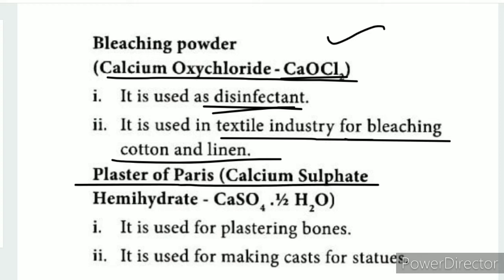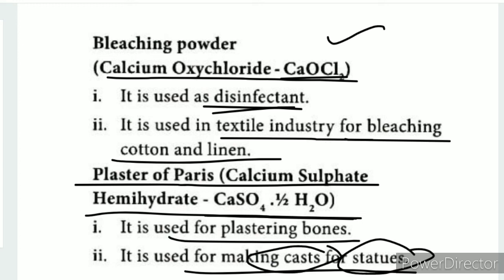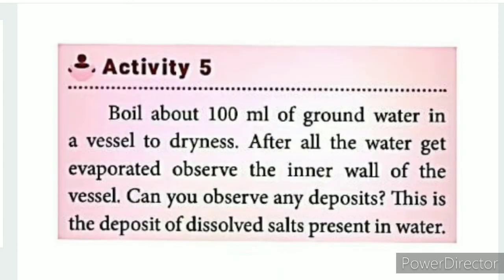Plaster of Paris is Calcium Sulfate Hemihydrate (CaSO₄·½H₂O). It contains water of crystallization, making it a hydrated salt. It is used for plastering broken bones and as part of a cast for making statues and architectural work.